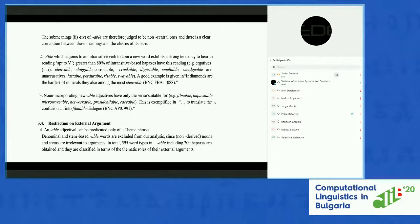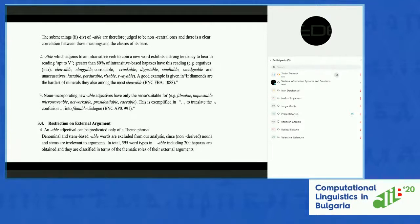This section examines a restriction on external argument pointed out by Williams: an -able adjectival can be predicated only of a theme argument. Denominal and stem-based -able words are excluded from our analysis since non-derived nouns and stems are not relevant to arguments. In total, 595 types of -able derivatives are obtained and classified in terms of the thematic roles of their external arguments. Table 4 indicates the ratio of -able words involving each thematic role which the external argument suits. Let's go to slide eight.